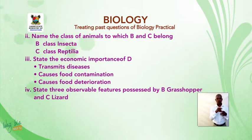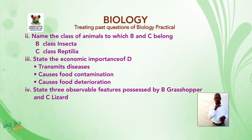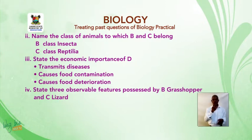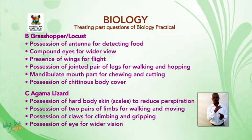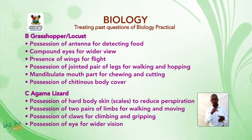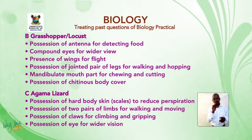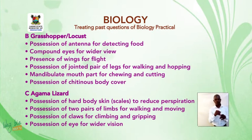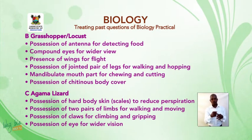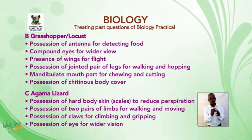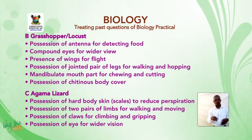Roman numeral 4: state 3 observable features possessed by B, grasshopper, and C, lizard. Observable features are features that you can see on the animal. For the grasshopper, specimen B: possession of antennae for detecting food, compound eyes for wider view, presence of wings for flight, possession of jointed pair of legs for walking and hopping, mandibulate mouth part for chewing and cutting, and possession of chitinous body cover.